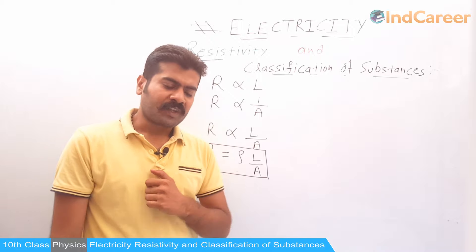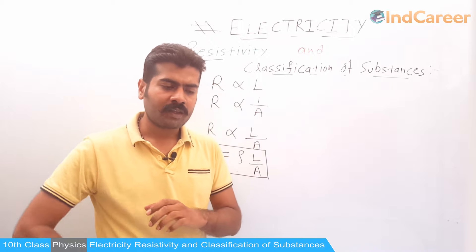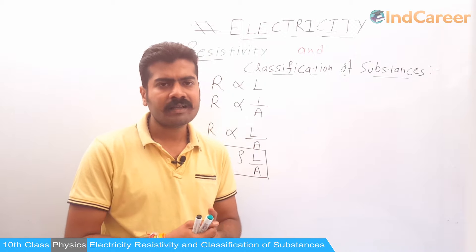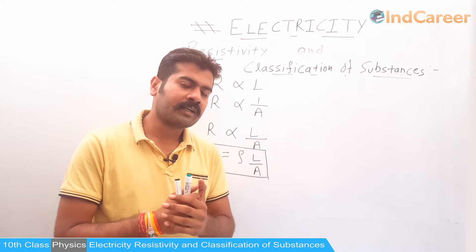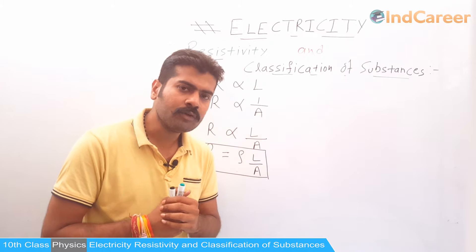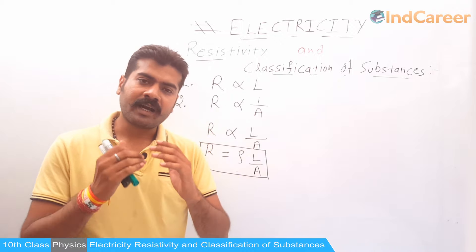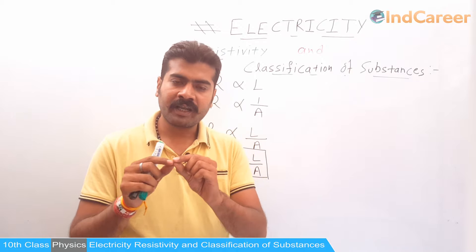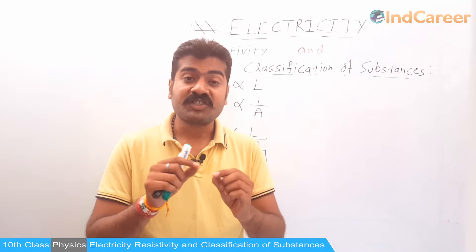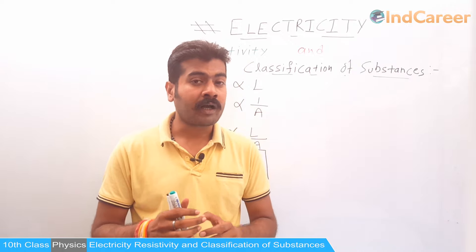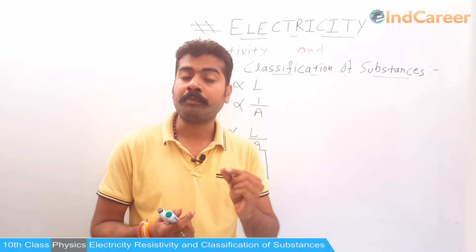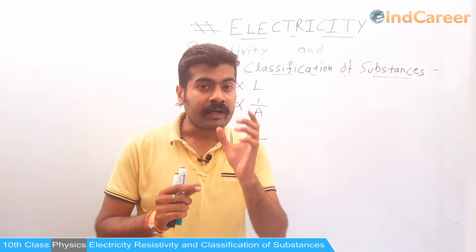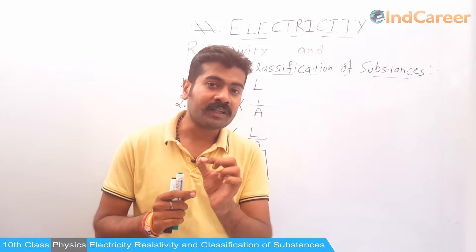What is resistivity? Resistivity is a property of material. Every conductor has some amount of resistance — no conductor on this earth has zero resistance. Resistivity is constant for every material. For example, the resistivity of copper has a fixed value regardless of the length, area, or shape and size of the conductor. Resistivity does not depend on the shape and size of the conductor; it is a property of the material.